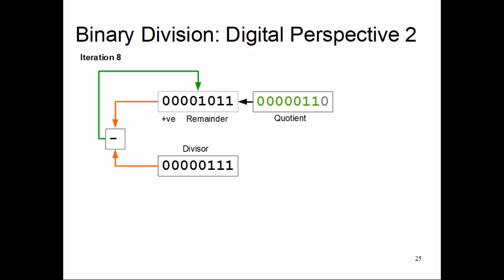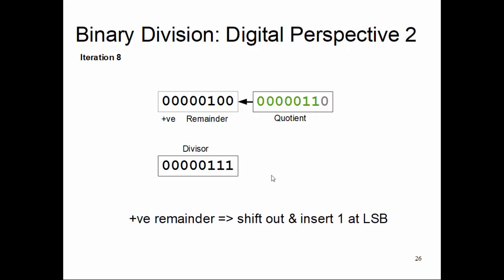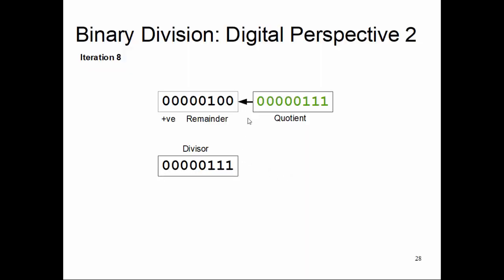One more shift, do the subtraction, positive remainder, so insert one and shift. Then subtraction, positive remainder, and you are basically done at that point. So your iteration eight, look at this, it doesn't need iteration nine, it only needs to have iteration eight and you are done. Your remainder register has your remainder bit pattern, quotient register has your quotient bit pattern.